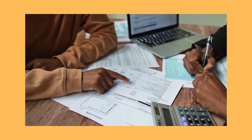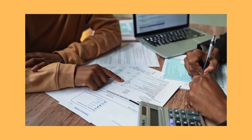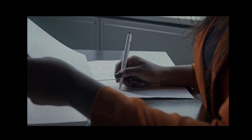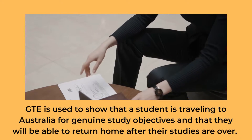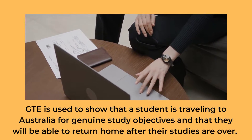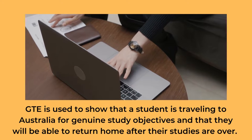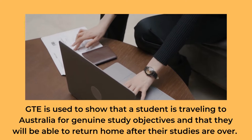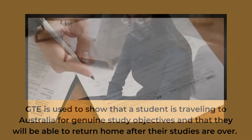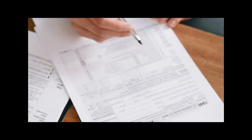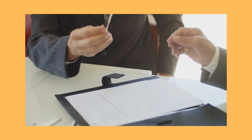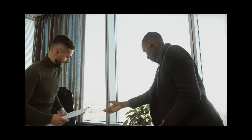International students must additionally complete a questionnaire known as the Genuine Temporary Entrant, or GTE. The GTE is used to show that a student is travelling to Australia for genuine study objectives and that they will be able to return home after their studies are over. The questionnaire consists of a series of questions designed to identify candidates who are using the student visa programme for reasons other than obtaining a good education. Before accepting their admission offer, students must complete their GTE questionnaire.